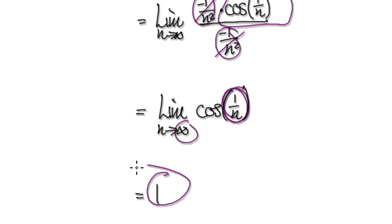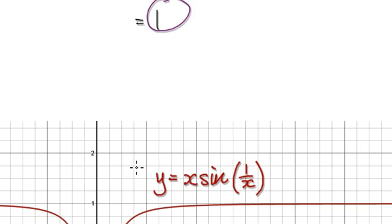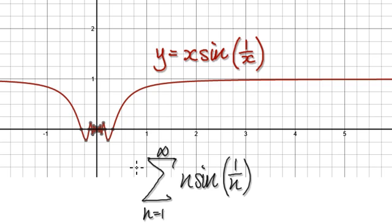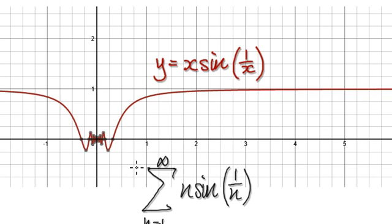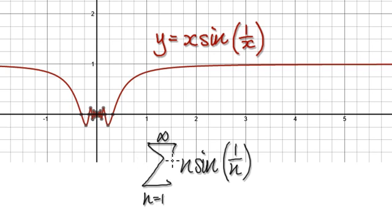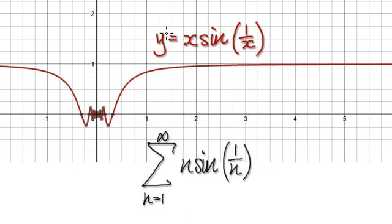In order for any series to converge, the limit must equal zero. But here the limit equals 1, so we can conclude that this series is going to diverge.